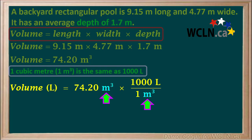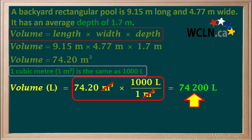This works because the unit meters cubed is on top and on the bottom, so they can be cancelled out, leaving us with the unit liters, which is what we wanted. 74.20 times 1,000 is equal to 74,200 liters. So we have now converted our volume to liters.